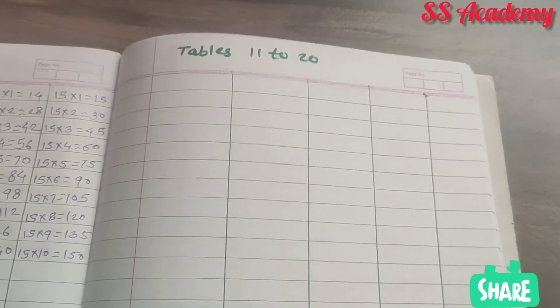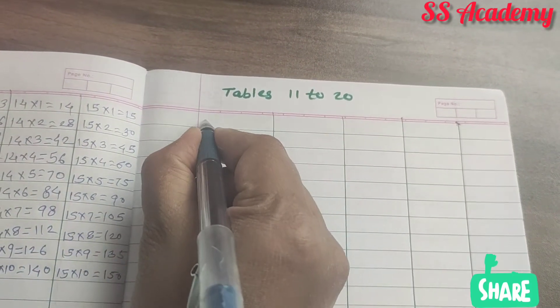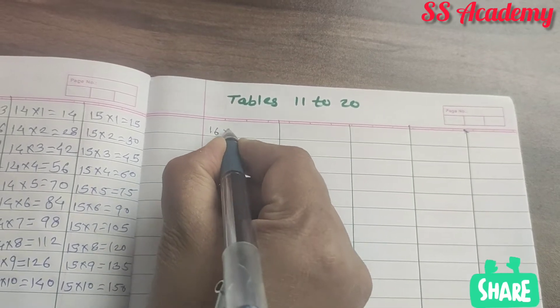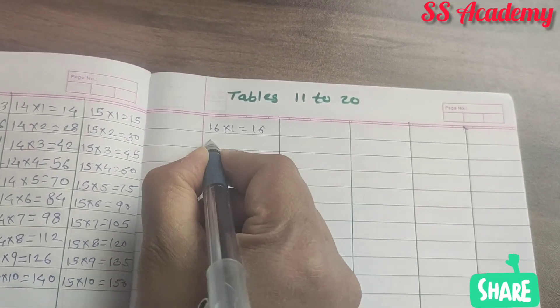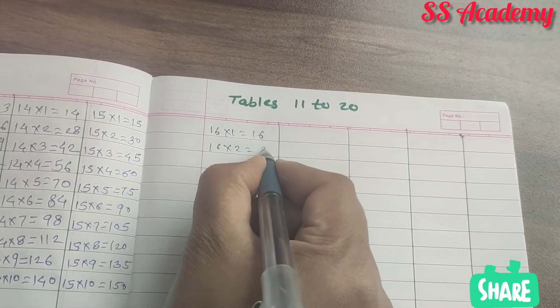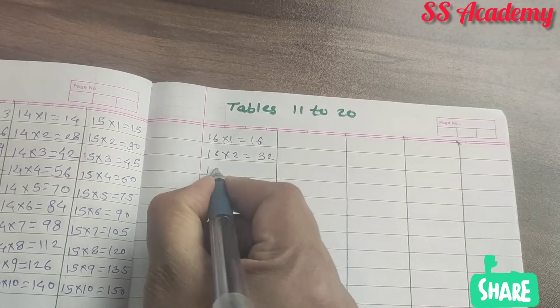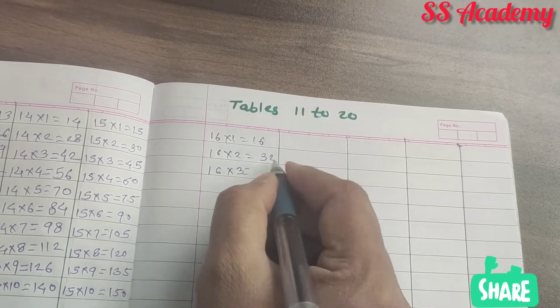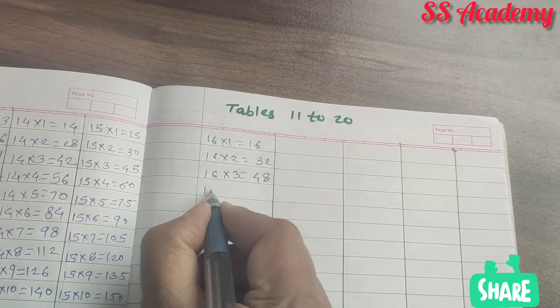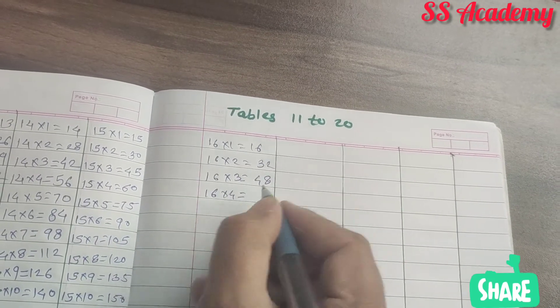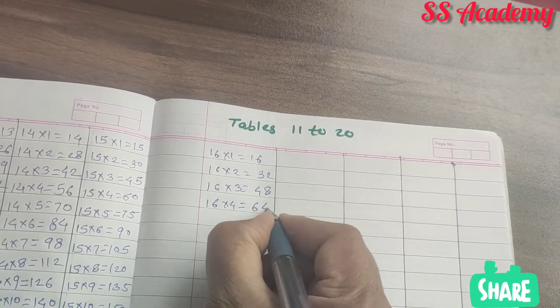On next page, next number 16. 16 times 1 is 16. 16 times 2 is 32. 16 times 3 is 48. 16 times 4 is 64.